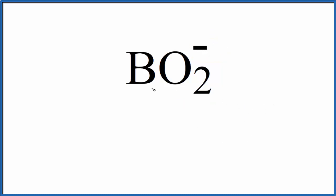First, we'll count the valence electrons. So boron, that's in group 13, sometimes called 3A. That has three valence electrons.